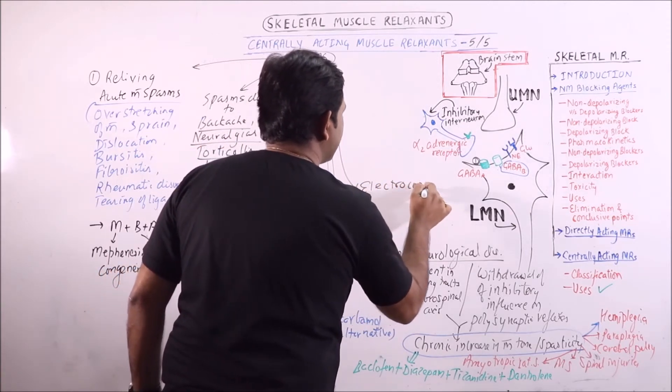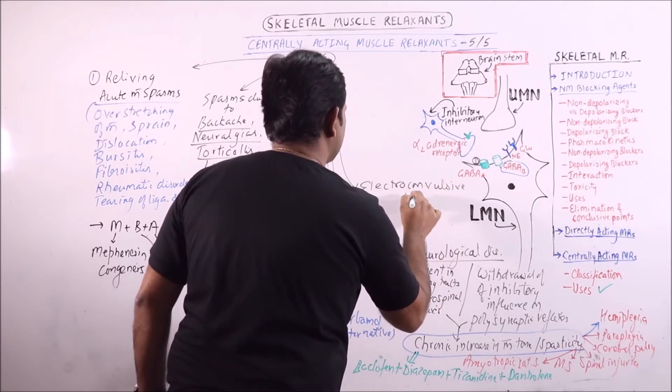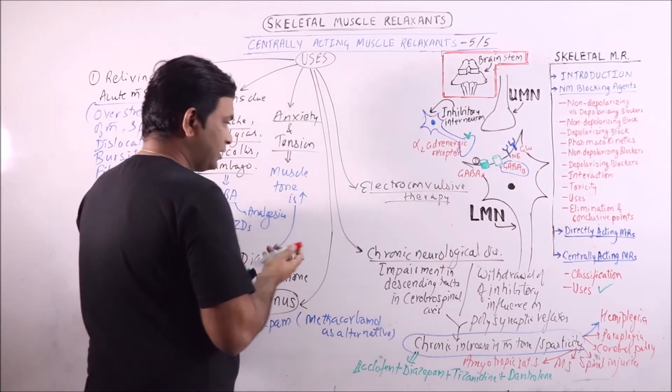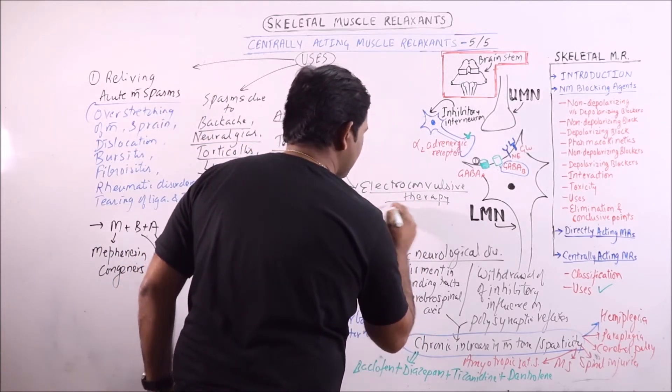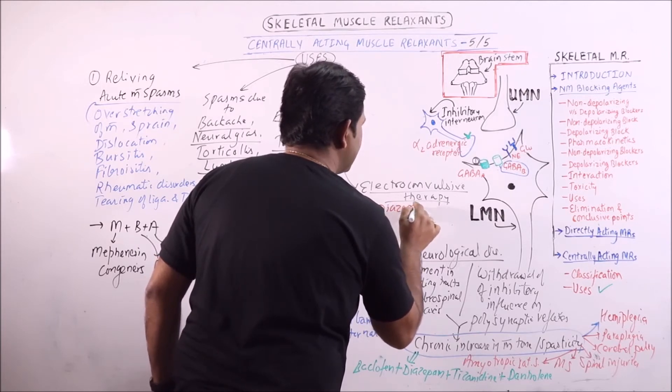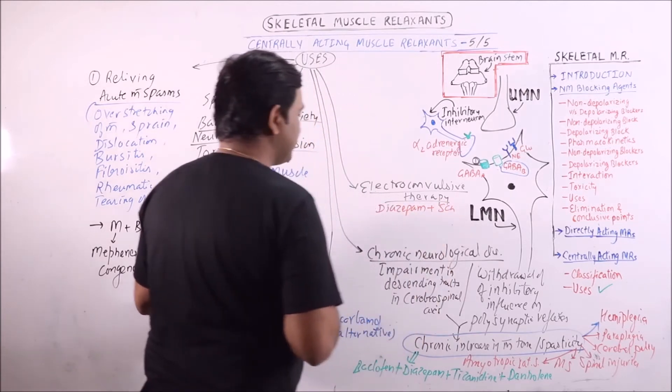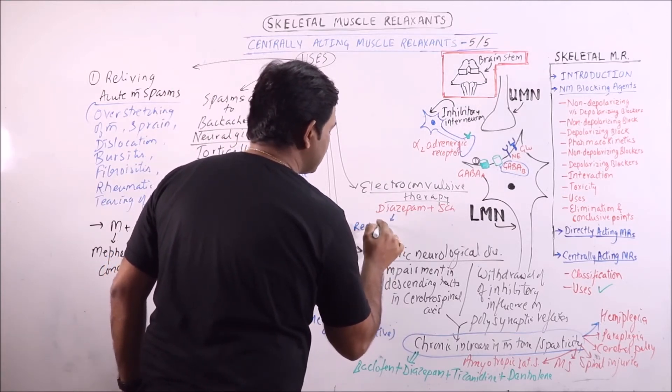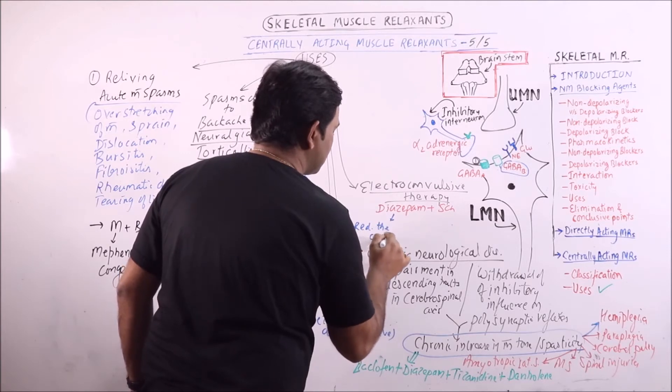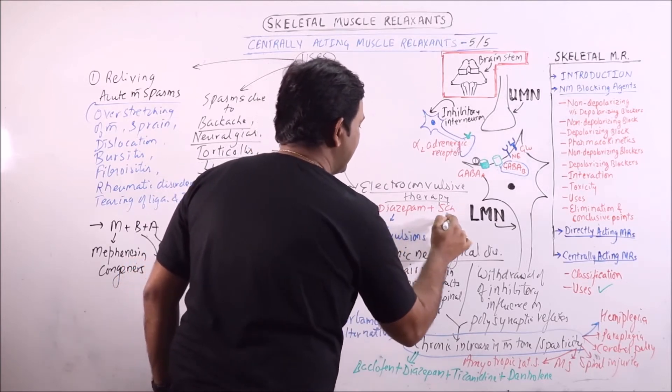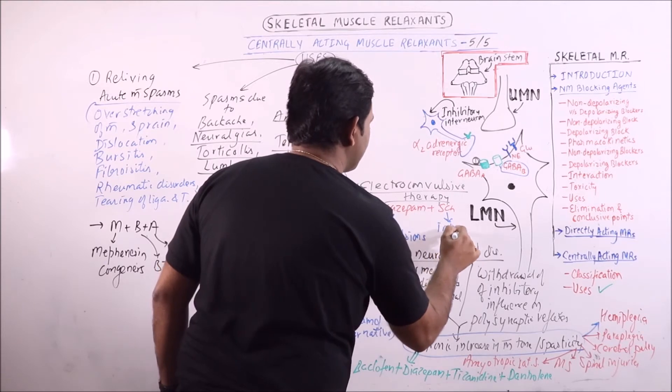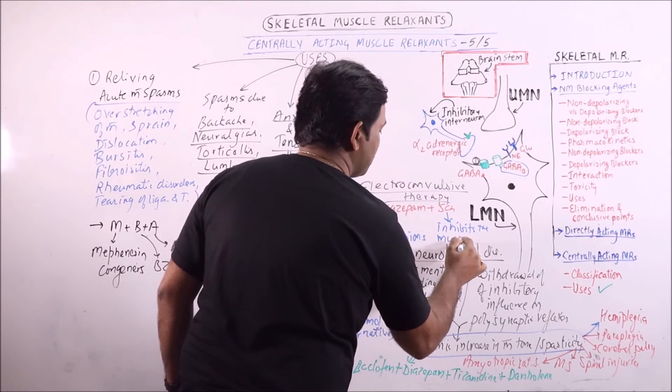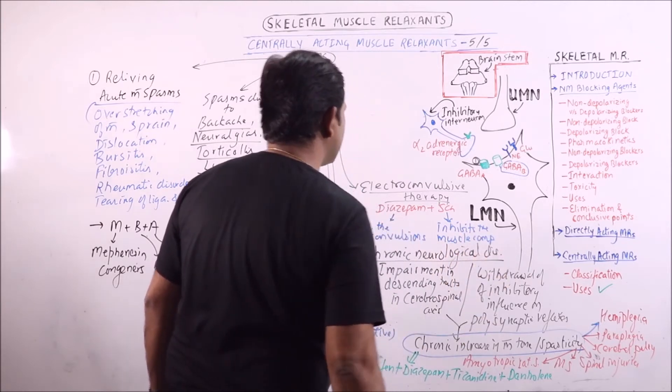In electroconvulsive therapy, diazepam plus succinylcholine is given. Diazepam reduces the chances of convulsions and succinylcholine inhibits the muscle component.